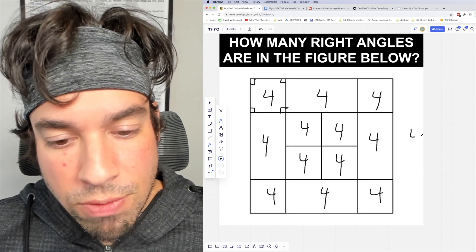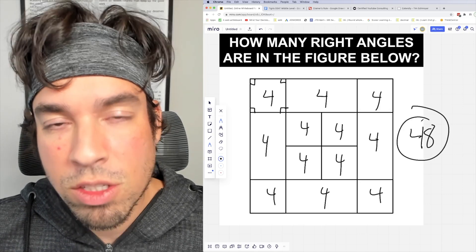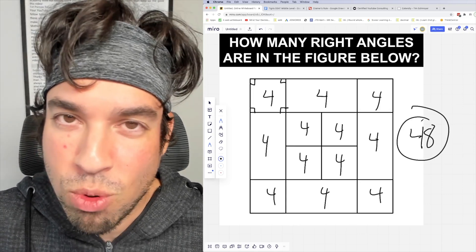12 times four is 48. So the answer to the question of how many right angles in the figure below is 48.